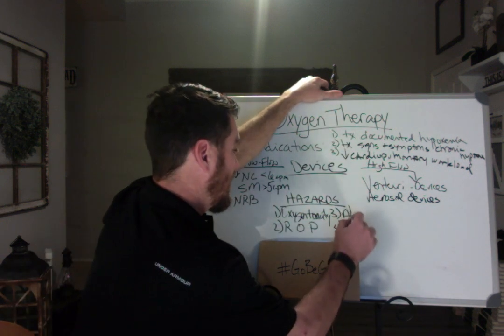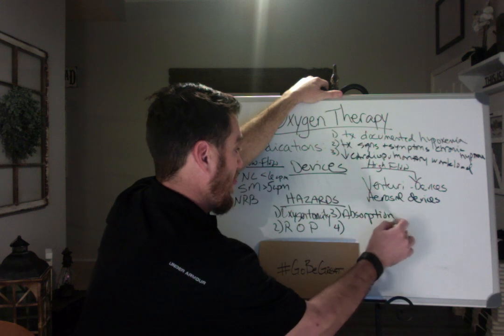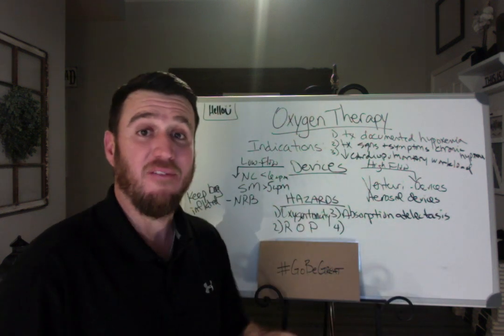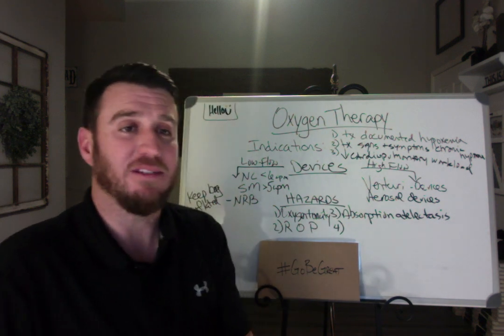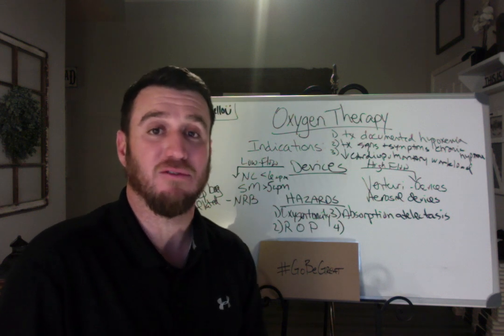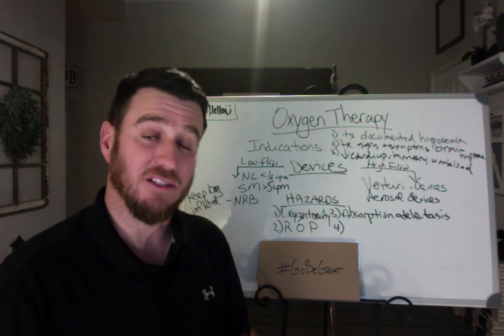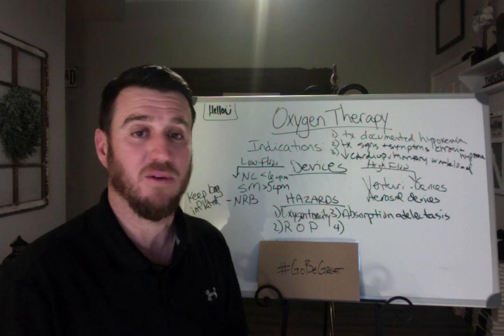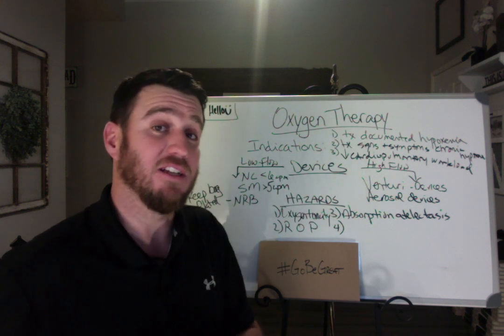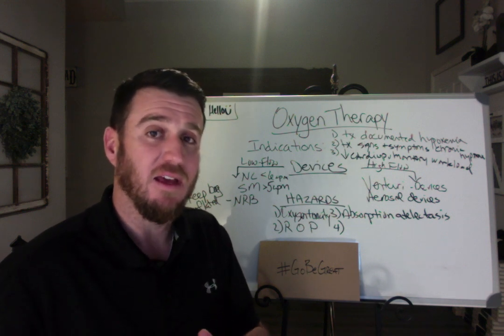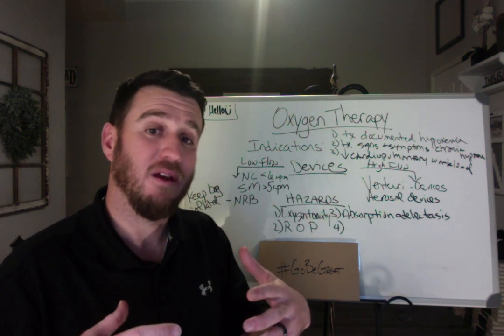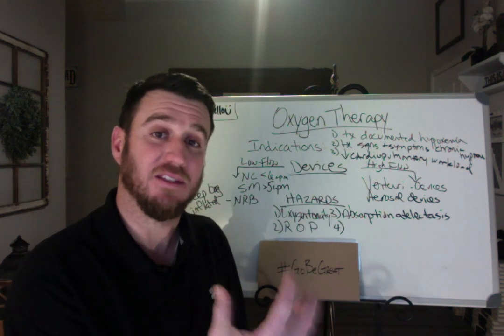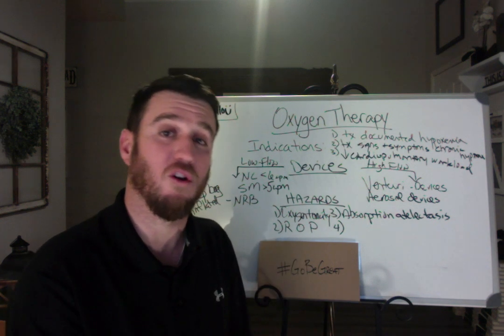The third hazard is absorption atelectasis. If you administer too high of an FiO2 to a patient, you can essentially flush out the alveoli of essential nitrogen, and that can lead to atelectasis. We all breathe 21% oxygen and roughly 79% nitrogen, and that nitrogen helps to keep our alveoli open. If you flush all the nitrogen out and put all oxygen in, all of the oxygen absorbs into the blood, nothing is left to keep the alveoli open, and they collapse — causing atelectasis.